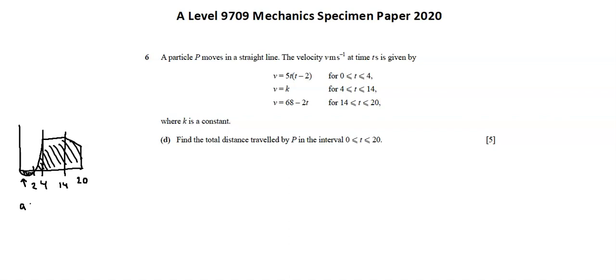A, using integration of the parabola from 0 to 2. B, integration of the parabola from 2 to 4. C, the rectangle from 4 to 14. And D, the trapezoid from 14 to 20. These four areas: for A, we want to integrate from 0 to 2 the function 5t squared minus 10t with respect to t.